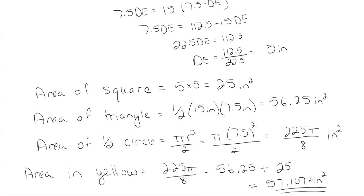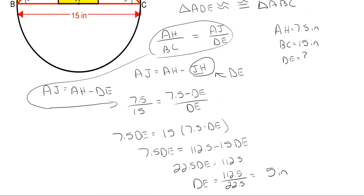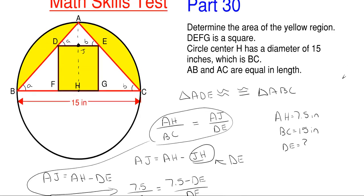That's how you would work that particular problem. With these types of problems, this is not necessarily the only procedure you could use to find this area, and it's not necessarily the quickest or the slowest. It is just one possible procedure to find the area in yellow, which is 57.107 square inches.